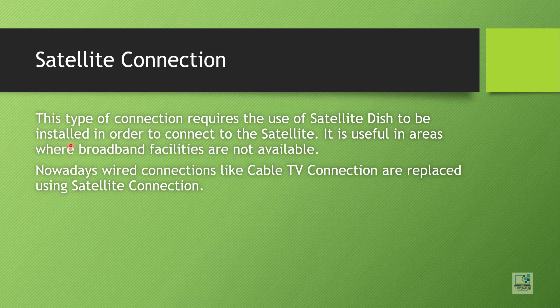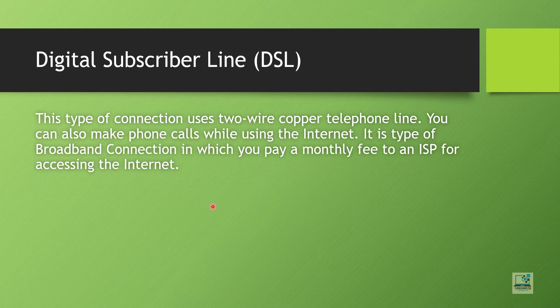Next is satellite connection. This type of connection requires a satellite dish to be installed in order to connect to a satellite. It is useful in areas where broadband facilities are not available. Nowadays wired connections like cable TV connections are being replaced by satellite connections — examples include Tata Sky and Airtel TV, where instead of normal cable TV you opt for satellite connection.